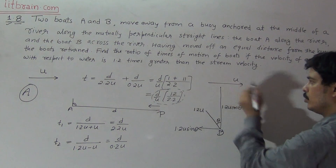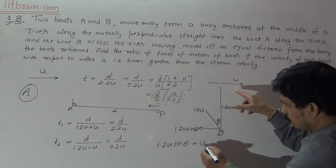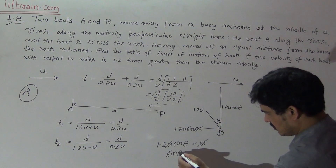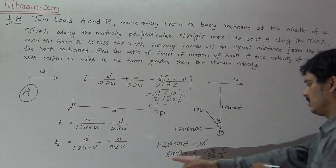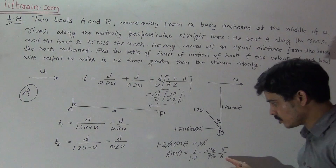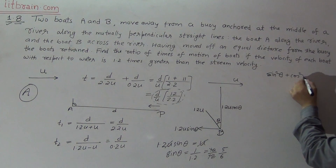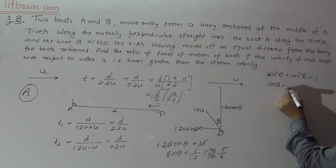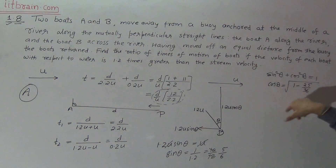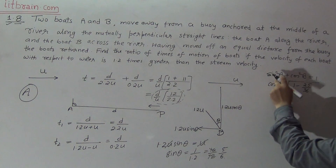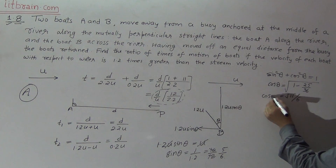For boat B to maintain itself perpendicular to the river, it is necessary that 1.2U·sin θ equals U. Solving this gives sin θ = 1/1.2 = 10/12 = 5/6. Since sin²θ + cos²θ = 1, we get cos²θ = 1 − 25/36 = 11/36, so cos θ = √11 / 6.